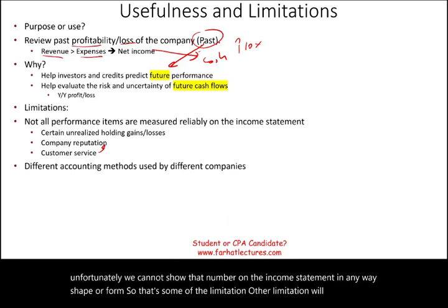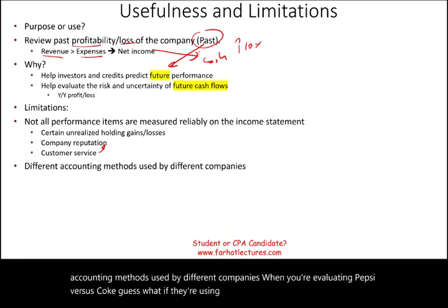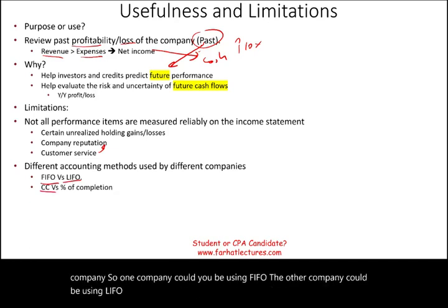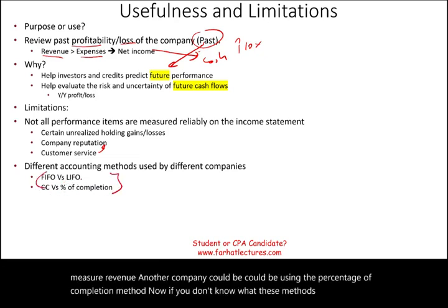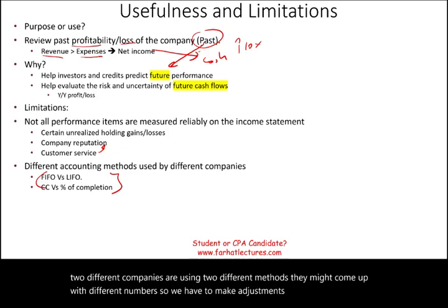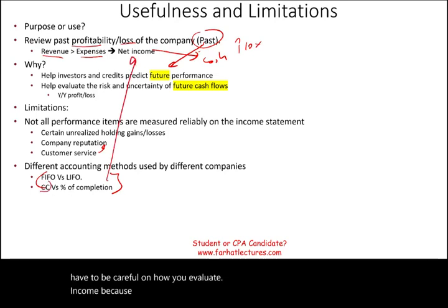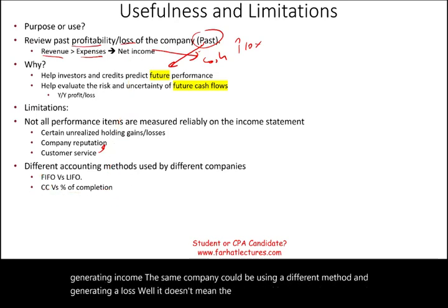Another limitation is the use of different accounting methods by different companies. When evaluating Pepsi versus Coke, if they're using two different methods you'll need to do extra work to determine true profitability. One company could be using FIFO, the other LIFO. One could use the completed contract method to measure revenue, another the percentage of completion method. Two different companies using two different methods may come up with different numbers. For example, the same company could generate income under one method and a loss under another — which doesn't necessarily mean the company is bad.